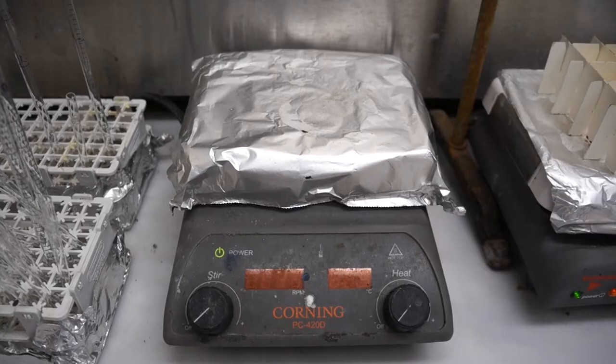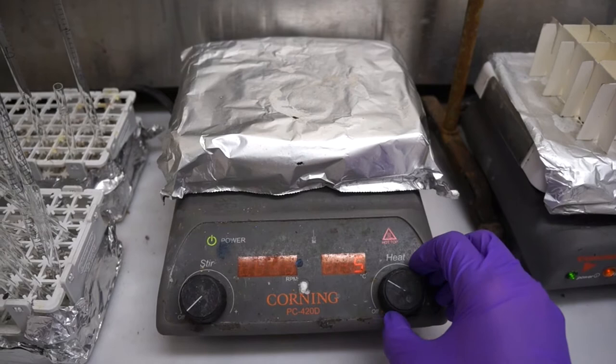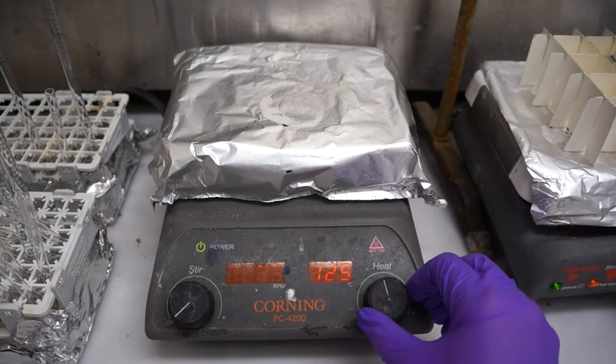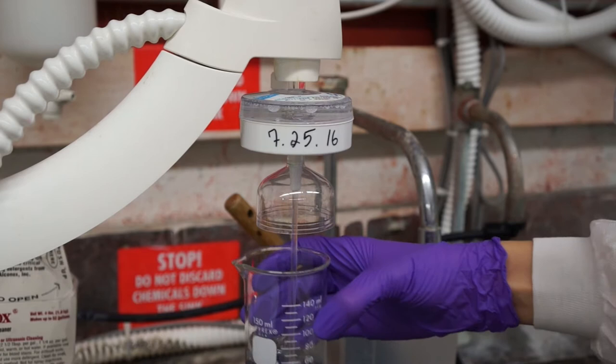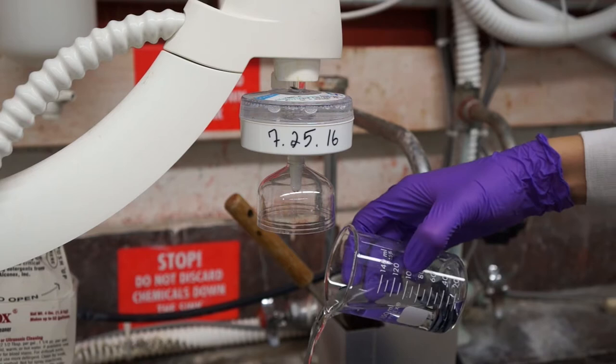With your wafer cut, we can move on to cleaning the pieces. Before starting with any solutions, preheat a hot plate in the hood by setting it to 125 degrees Celsius.